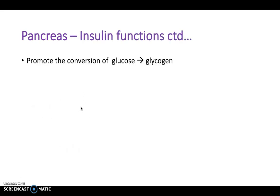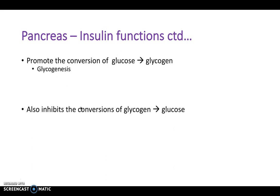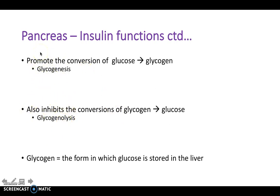In terms of insulin function: insulin promotes the conversion of glucose to glycogen — a process called glycogenesis. Therefore, if it's promoting glucose to glycogen, it must be inhibiting the opposite process — inhibiting glycogenolysis, the breakdown of glycogen to glucose. So insulin inhibits glycogenolysis but promotes glycogenesis. Glycogen is the form of glucose which we can store in the liver when we don't want all that glucose free in our blood.